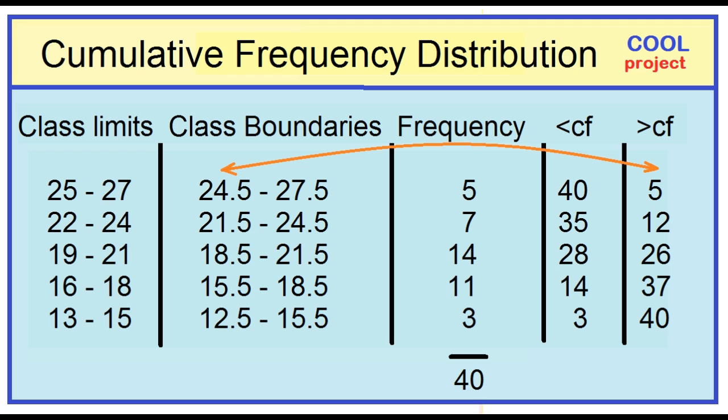This means that five women each had a boyfriend when they were more than 24.5 years of age. Twelve women each had a boyfriend when they were more than 21.5 years of age. Twenty-six women each had a boyfriend when they were more than 18.5 years of age. Thirty-seven women each had a boyfriend when they were more than 15.5 years of age. And forty women each had a boyfriend when they were more than 12.5 years of age.